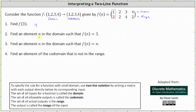For number two, we enter one. Number three: we're asked to find the element n in the domain such that f of n equals n, which means the input and the output are the same, or we can say the image is equal to the input. Looking at the matrix, notice the second column — the input and the output are the same. And therefore f of n equals n when n is equal to two. We enter two.